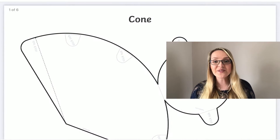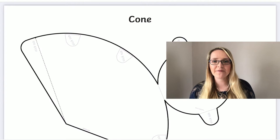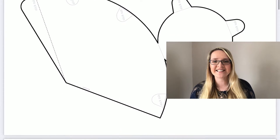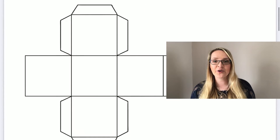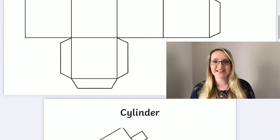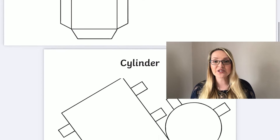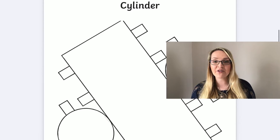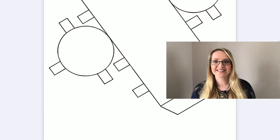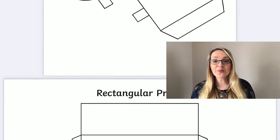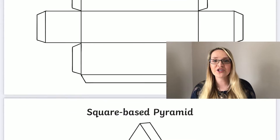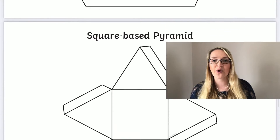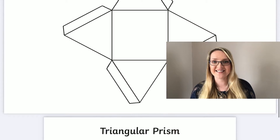Once you've downloaded the resource you will find six different 3D shapes, from a cube to a cylinder to a square-based pyramid. You can print them all or you can choose to print the ones that you need.